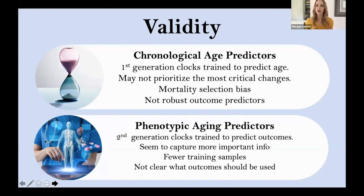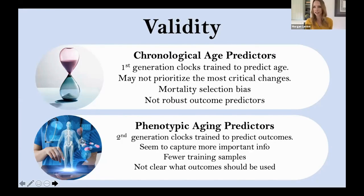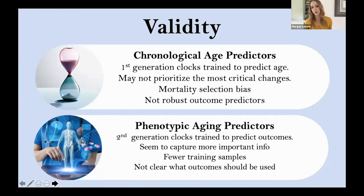This is kind of where we came in with what we call the second generation measures. Can we actually predict things like phenotypic aging or some proxy for biological aging, and develop biomarkers for them? We think that by doing this, we'll actually be capturing more important information. But there are a few drawbacks. It's a lot easier to get a huge sample for training if your outcome is age, since age is really easy to measure, so most data available for making second generation clocks is going to be a lot smaller. And it's not entirely clear what our outcome actually should be — whether we should combine a number of different outcomes, whether we should just use things like mortality, or whether we should combine a bunch of different outcomes to make better phenotypic age predictors.